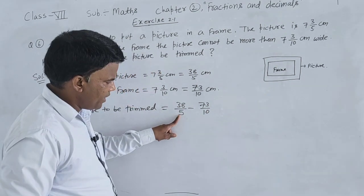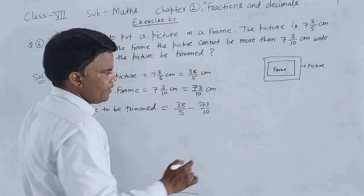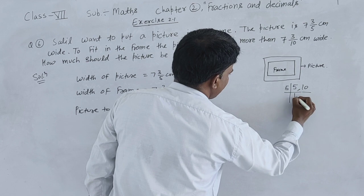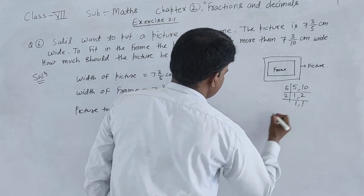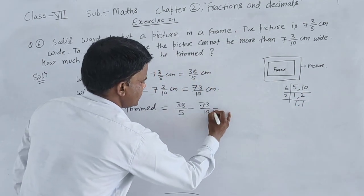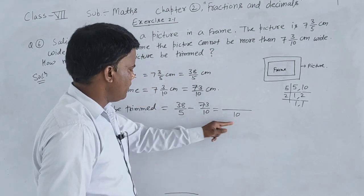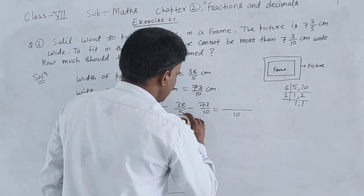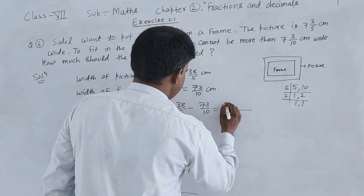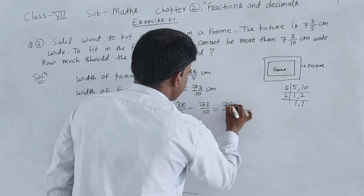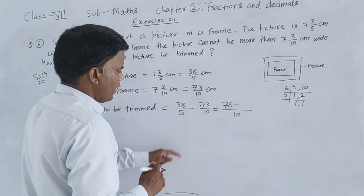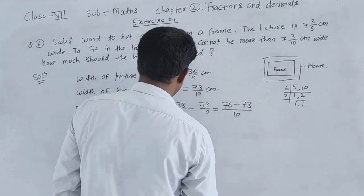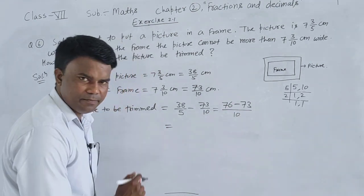Taking LCM of denominators 5 and 10: LCM is 10. Dividing 10 by 5 gives 2, then 38 times 2 equals 76. So we get 76/10.